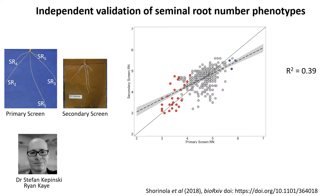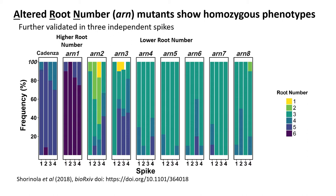We then validated these phenotypes in an independent screen, working with collaborators from the University of Leeds — Dr. Stefan Kepinski and his PhD student Ryan Kai. They used a similar platform and phenotyped a subset of our lines. The correlation between the two screens was quite good and encouraging. The mutants found to have higher or lower root numbers showed up in both screens, further confirming their phenotypes. We chose mutants showing good phenotype in both screens for further characterization.